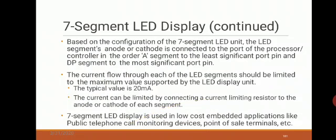The A segment is connected to the least significant port pin and the DP segment to the most significant port pin. Current through each LED segment must be limited to the maximum supported value — typically 20 milliamps. A series resistor is connected from the port pins to the LEDs to limit current, similar to single LED interfacing. Seven segment LEDs are used in low-cost embedded applications like public telephone call monitoring devices and point-of-sale terminals.